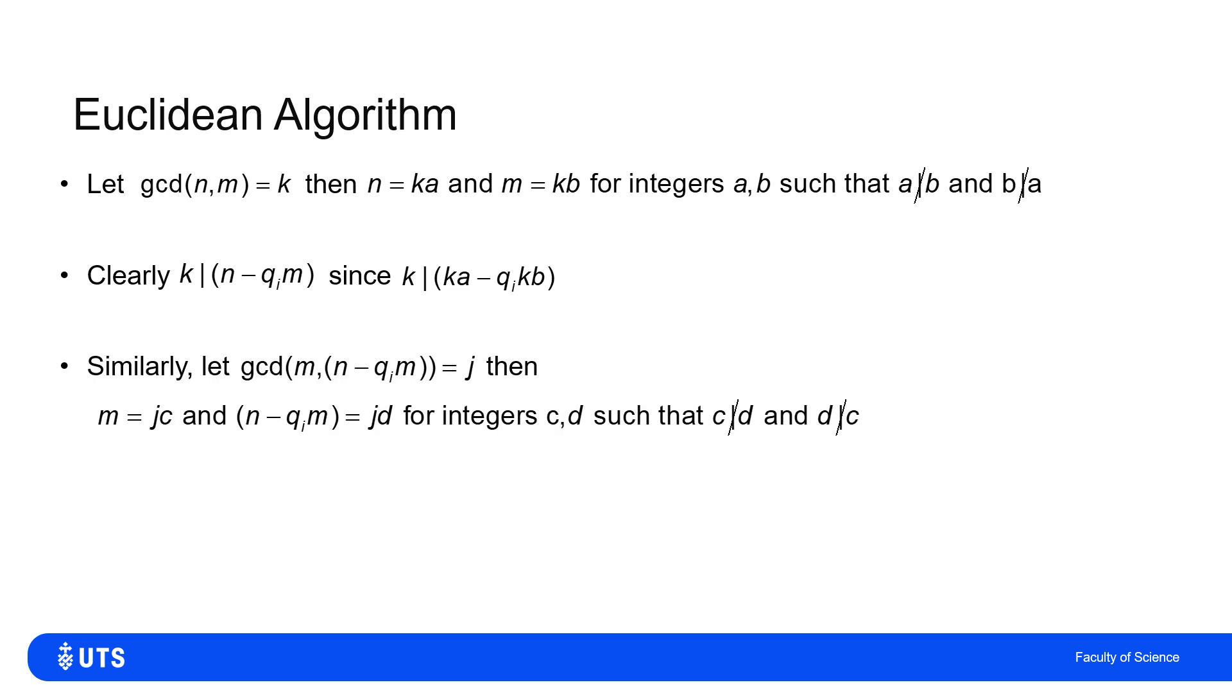And similarly, I can say that if the greatest common divisor of M and N minus qi lots of M is J, then M is J lots of C, and N minus qi M is J lots of D for integers C and D, which again, the greatest common divisor means C can't divide D, and D can't divide C. Then what I'm left with is I've shown that J has to divide N because J has to divide qi lots of M and N minus qi lots of M by definition.